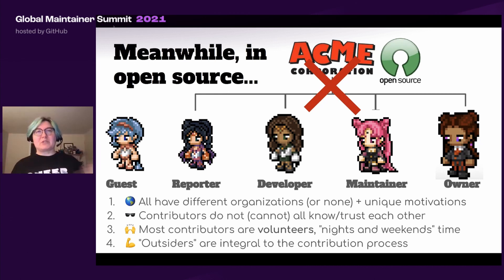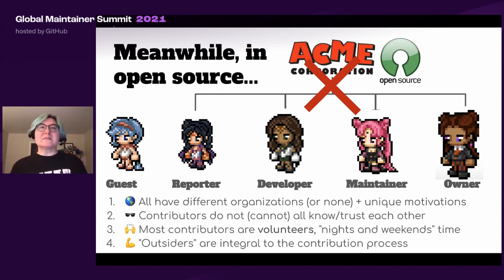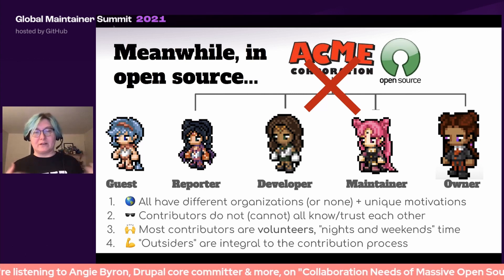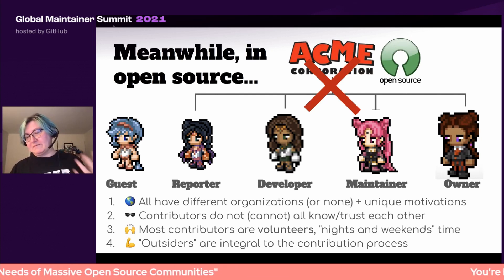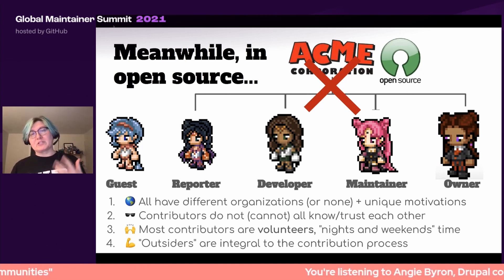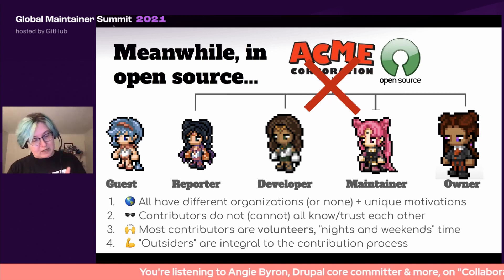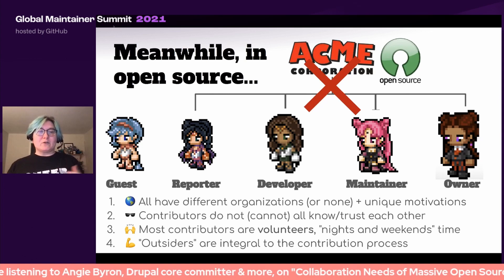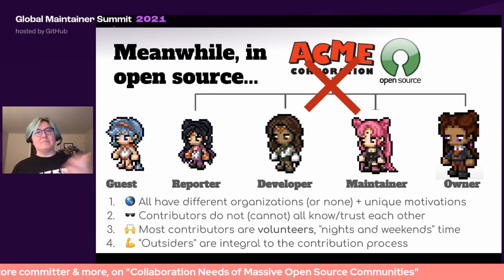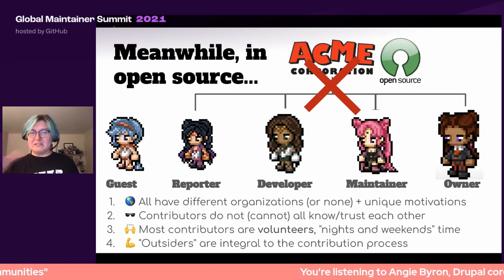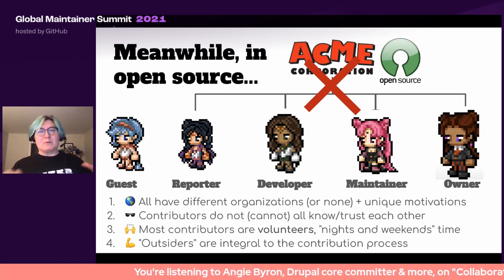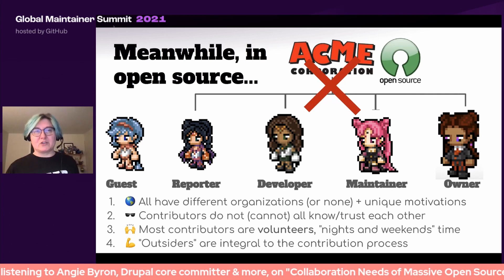But in open source, all of those assumptions kind of go out the window. These folks don't work for the same company — they probably don't work for any company, and they may work for competing companies. There is no possible way for all of the contributors in a massive open source project to even know each other, let alone trust each other. Many, many of these contributors are volunteers who are donating nights and weekends time. The time that your contributors are giving you is precious and valuable, and you have to make the most of it every single time. And finally, these so-called outsiders are integral to your contribution process — somebody might come in and just drop the best accessibility review you've ever read in your life, and they start giving really awesome advice.